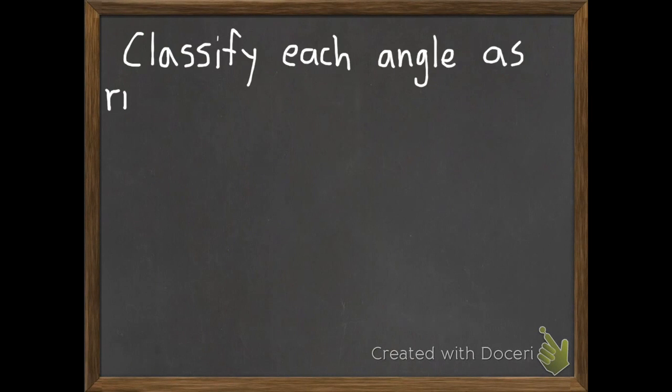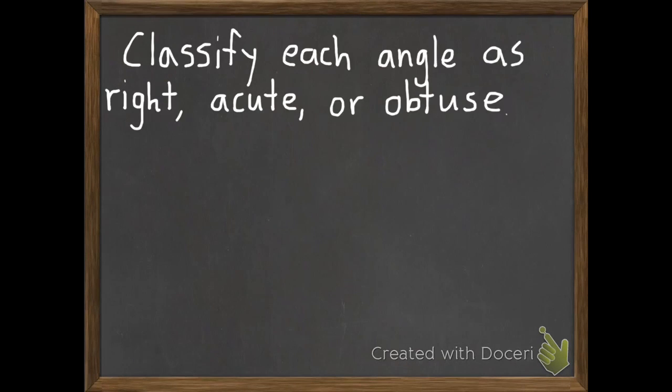Now that we have this vocabulary down, we have some example questions. So the instructions say classify each angle as right, acute, or obtuse. So I have three angles here and I need to write if it's a right angle, an acute angle, or an obtuse angle.